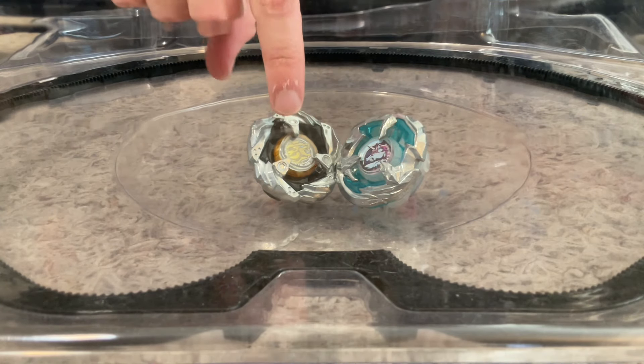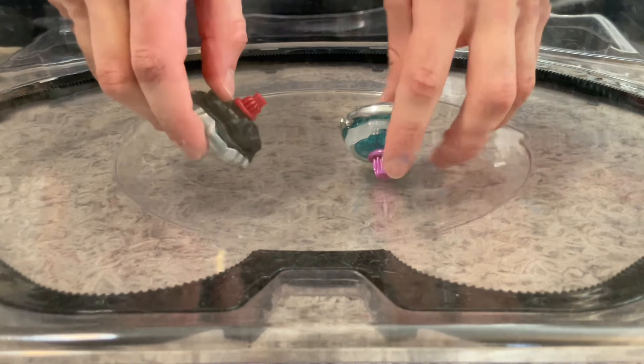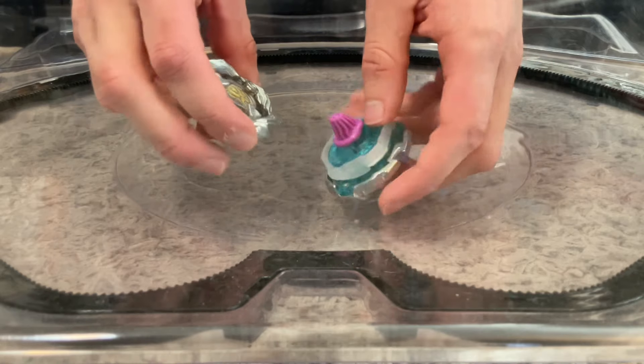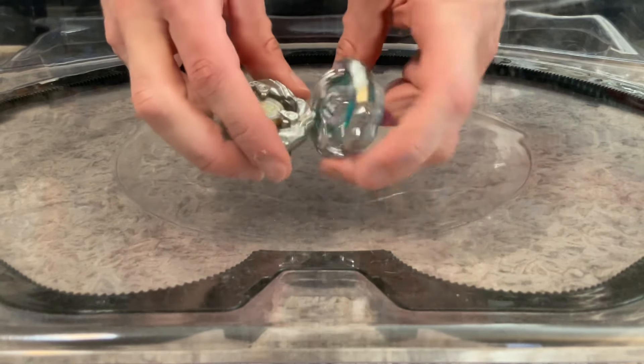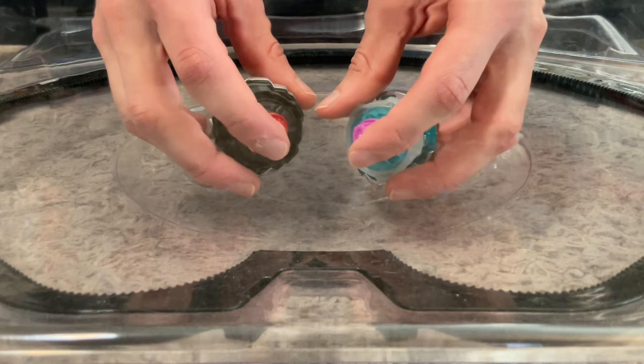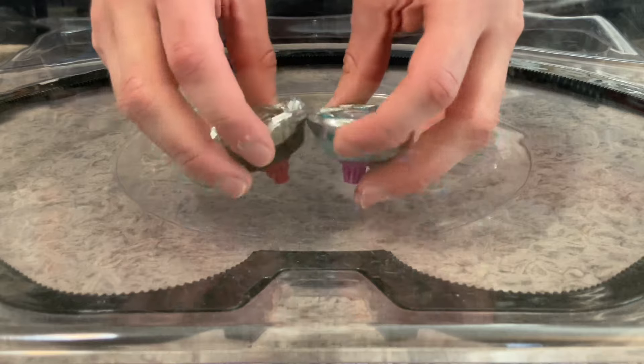Today I'll be battling Leon Claw 5-60 Point and Unicorn Sting 5-60 Gear Point. They're fairly similar beys. They both have the same ratchet and similar bits, so I'll be battling them today.